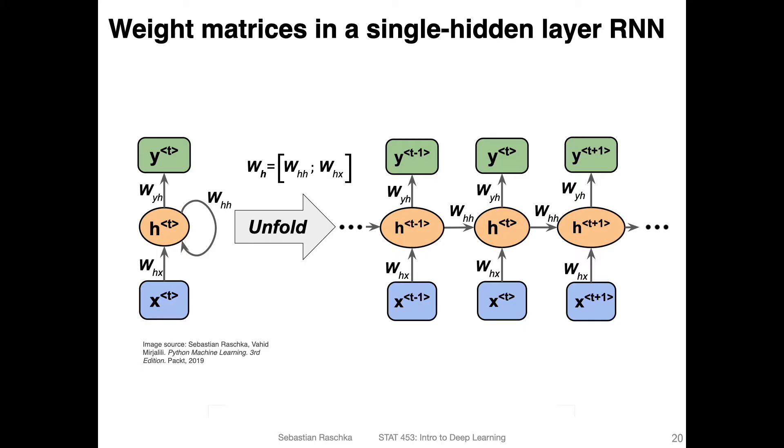So here I'm showing you a figure that is similar to what I've shown you before in an earlier video. We have a recurrent neural network with a single hidden layer. On the left hand side, this is the compact notation where we only see the input and the output here, and then we have the hidden layer here with this recurrent edge.